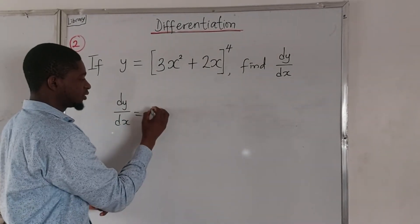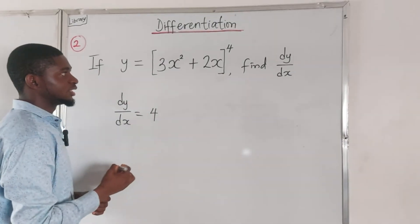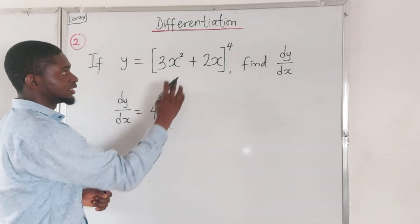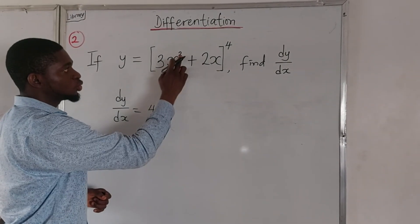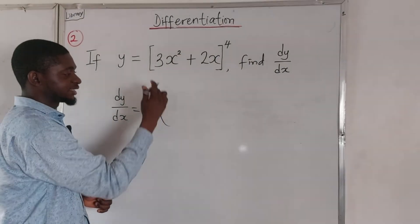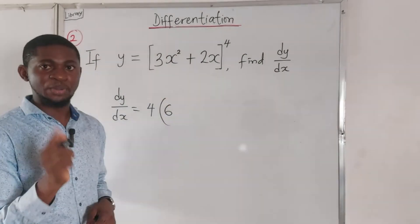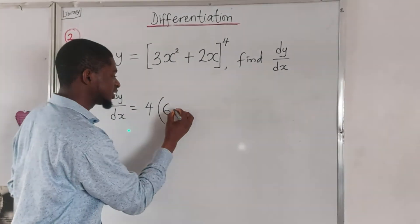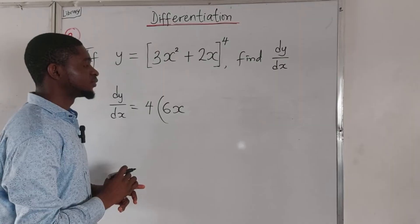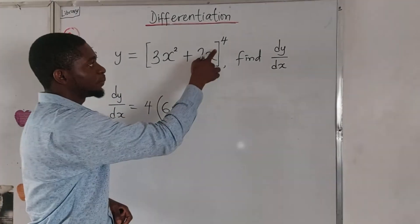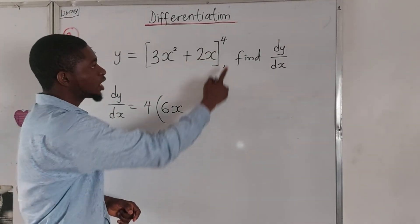This power, first bring it down here: 4. Then open brackets, work on this: 2 multiplied by 3, that's 6. This is x raised to the power of 2, so subtract 1 from the power, that gives you 1. That means x raised to the power of 1.